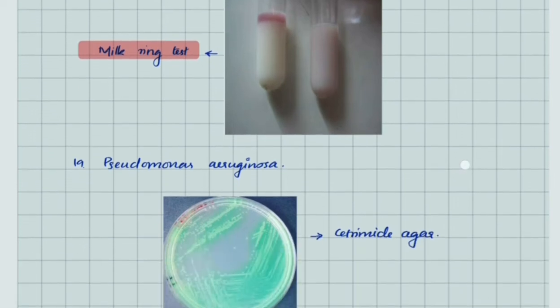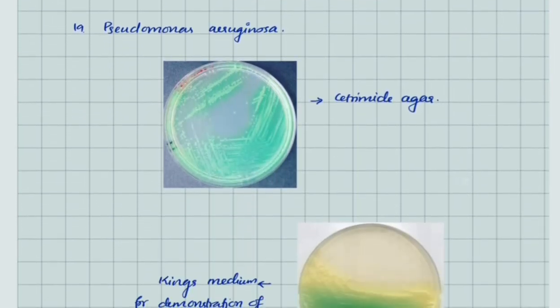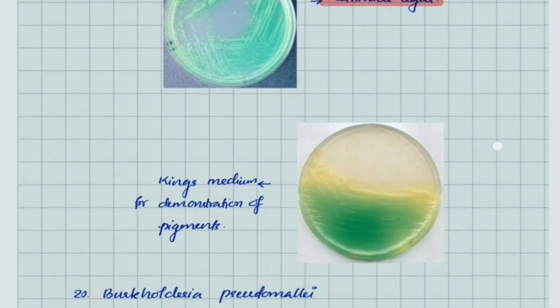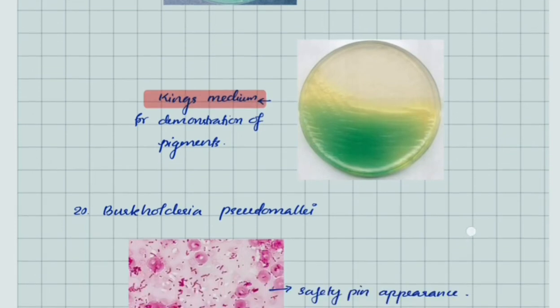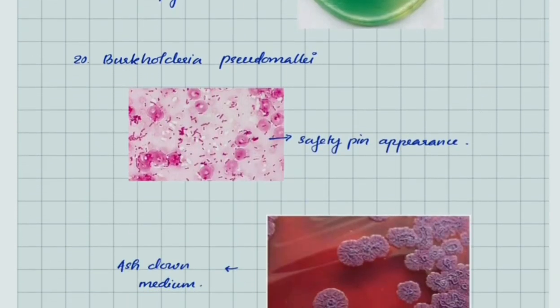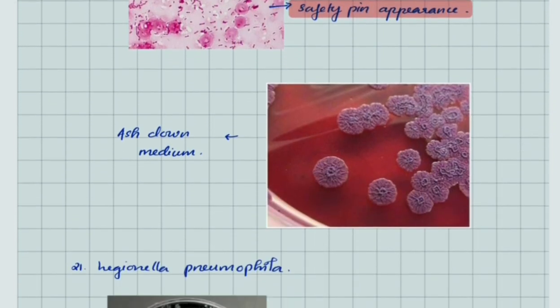Pseudomonas aeruginosa—the specific agar used is cetrimide agar. King's medium is used for demonstration of pigments of Pseudomonas. Burkholderia pseudomallei shows specific safety pin appearance and growth in Ashdown medium.